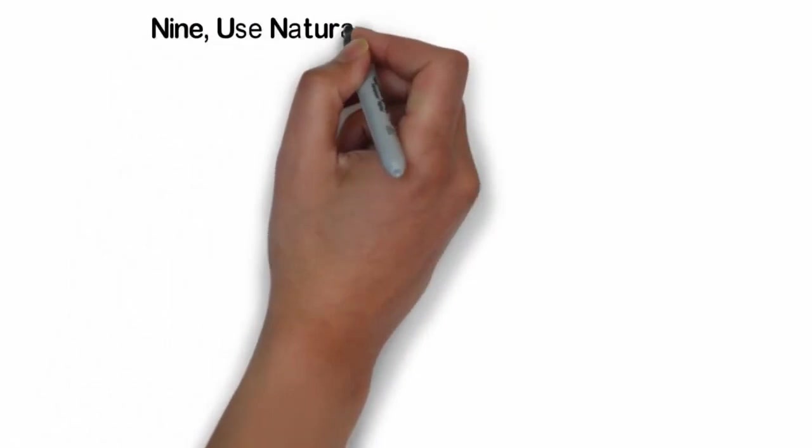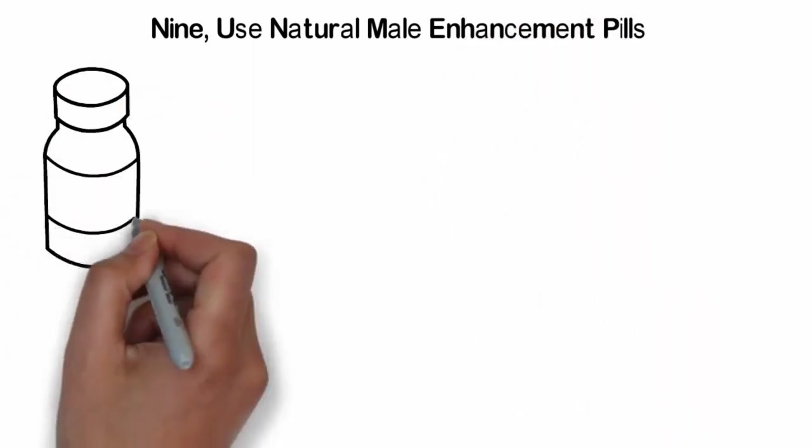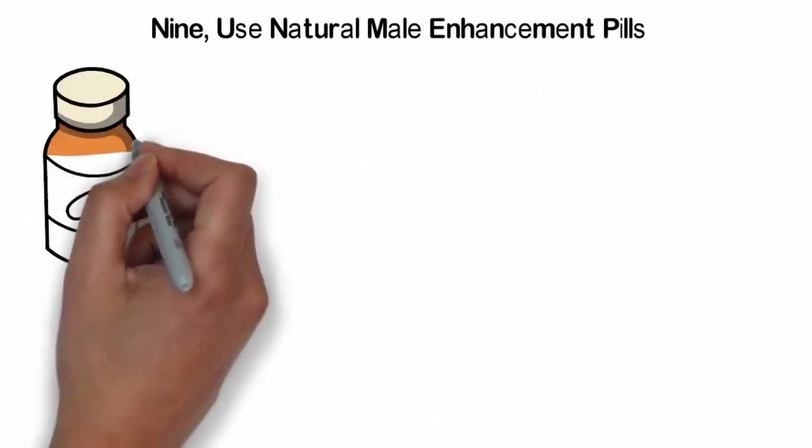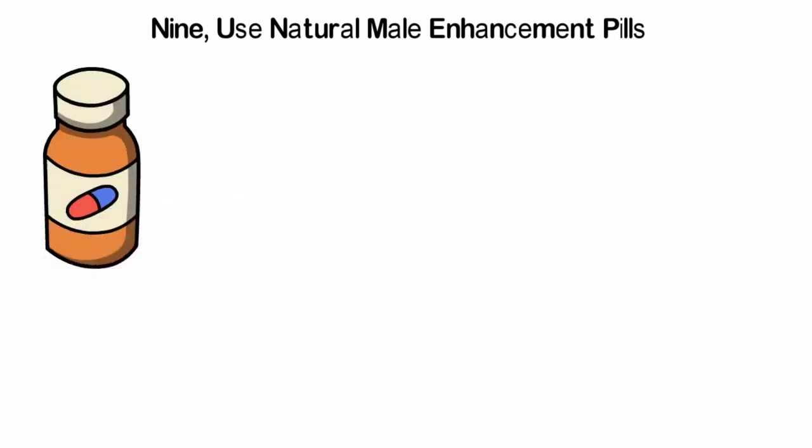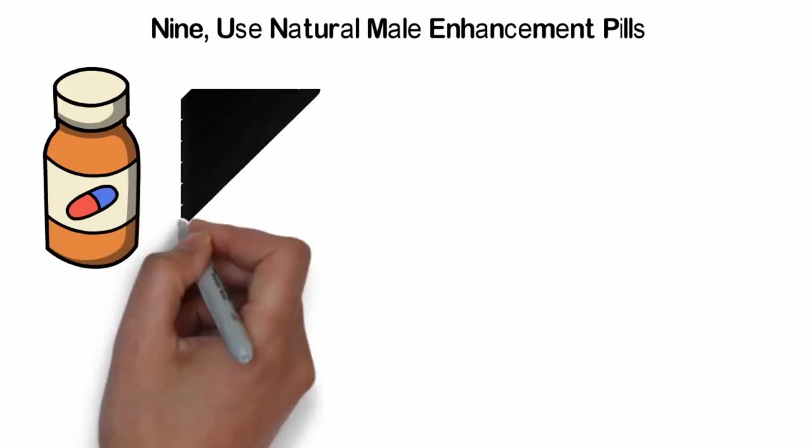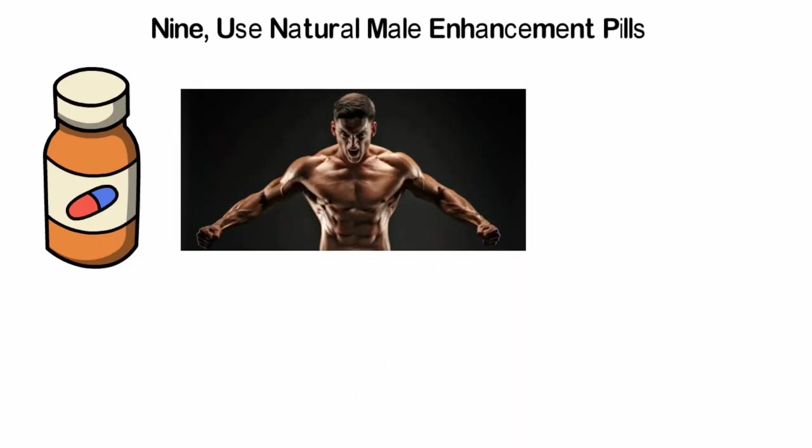Ninth, use natural male enhancement pills. Last but not the least, you must try natural penis pills. These pills are a preferred way to improve sexual performance. They are safe and free of side effects. Such pills have come a long way and some of the best formulas are now backed with clinical approvals and trials to substantiate their claims.